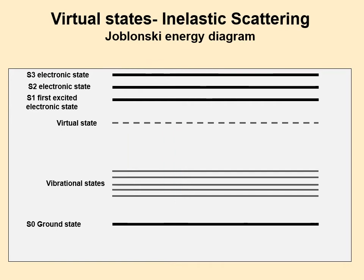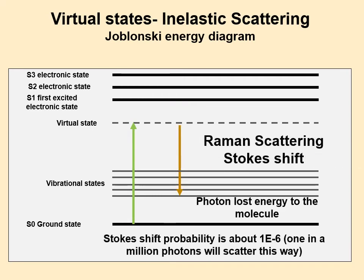But every now and then, a photon will go up to the virtual state but not come back to the ground state. Instead it goes to one of the vibrational states — so energy is lost from the photon into the molecule. This only happens about one out of a million photons.